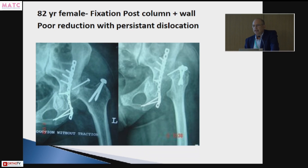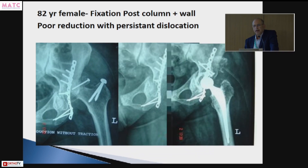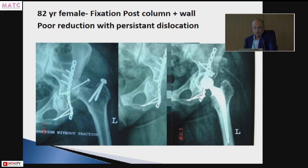Another situation where fixation has been completely haywire — an 82-year-old female. The posterior column has been plated but the hip continues to be dislocated. The reduction is completely unsatisfactory and there is a large posterior superior defect where the screw is positioned. In this situation you need to reconstruct the posterior superior defect with a graft. I used the head as a graft and fixed it into the defect with screws. The plate didn't need removal, though a few screws were removed, and because of poor bone quality I used a cemented cup.